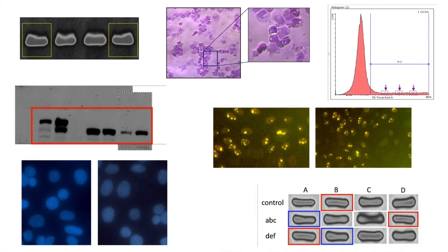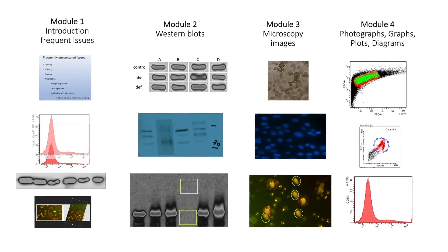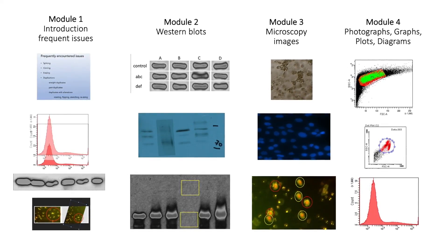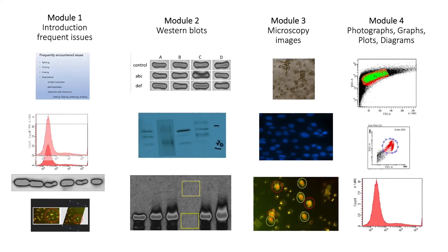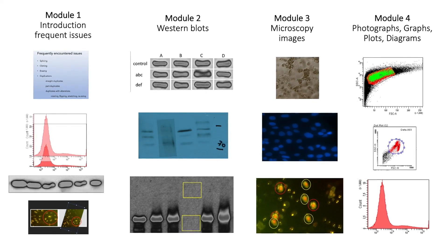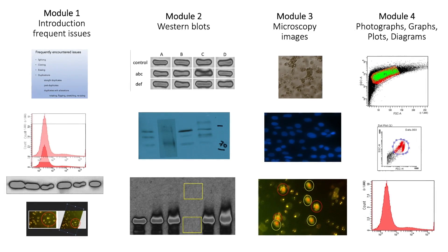This first module will give an introduction to the subject of image alteration and duplication in scientific publications. The term alteration is used in this tutorial to refer to image processing that alters scientific data in ways that are at odds with good scientific practice. The examples shown are mainly from the life sciences, but the screening techniques introduced are equally applicable to images from other disciplines. This tutorial consists of four modules covering several examples of image alteration and basic screening techniques using a variety of image processing software, including basic screening in Preview and more comprehensive techniques in Photoshop.